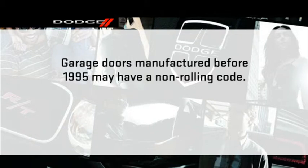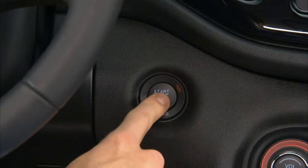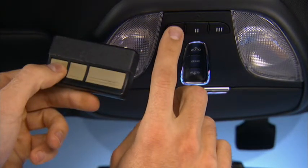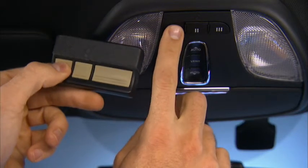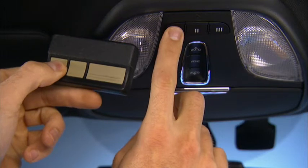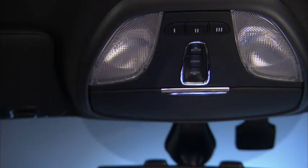If your garage door opener was manufactured before 1995, it may have a non-rolling code. To program a non-rolling code, put the ignition in the on-run position but don't start the engine, and hold the battery side of your handheld transmitter away from the HomeLink button you wish to program. Place the handheld transmitter 1 to 3 inches or 3 to 8 centimeters away from the HomeLink button while keeping the indicator light in view. Simultaneously press and hold both the chosen HomeLink button and the handheld transmitter button until the HomeLink indicator changes from a slow to a rapidly blinking light, then release both buttons. It may take up to 30 seconds or longer in rare cases. The garage door may open and close during programming.